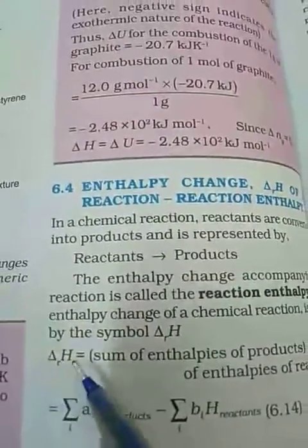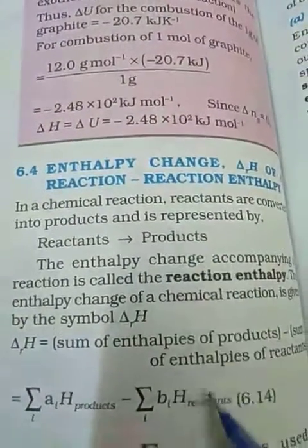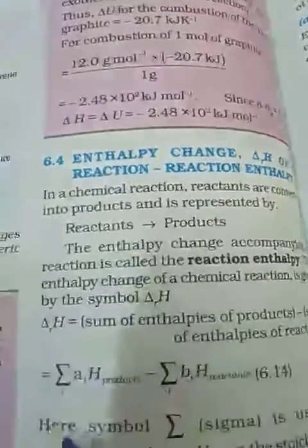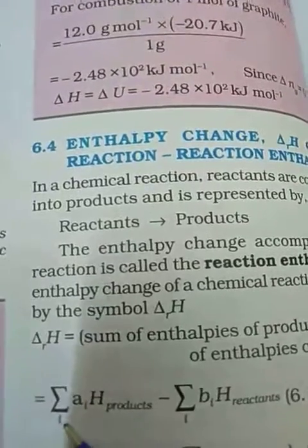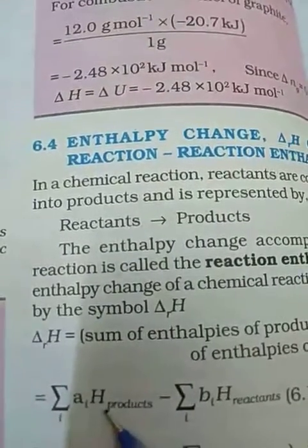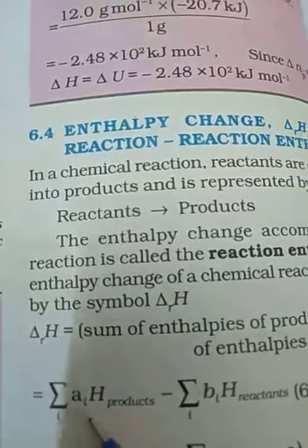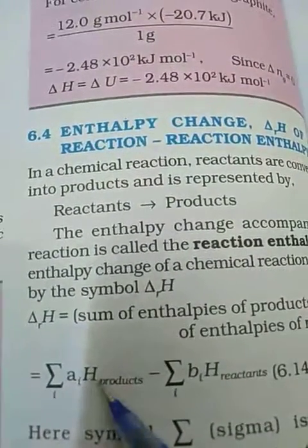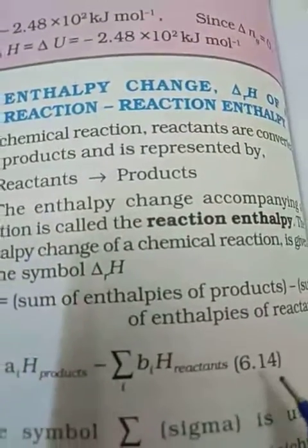The enthalpy change of a chemical reaction is given by the symbol delta RH. Delta RH is equal to sum of enthalpies of products minus sum of enthalpies of reactants. This is represented by sigma at a given temperature — sigma for all products and sigma for all reactants. This equation is called 6.41.